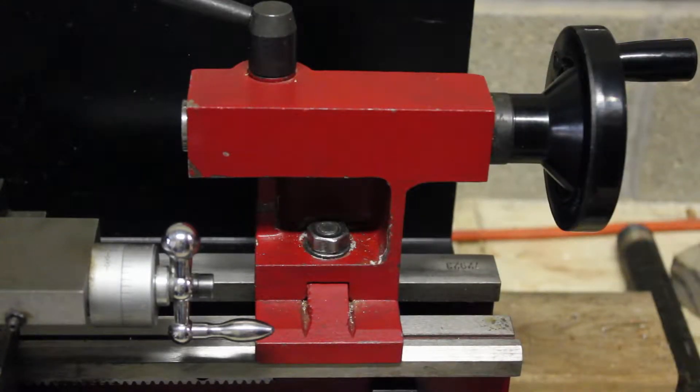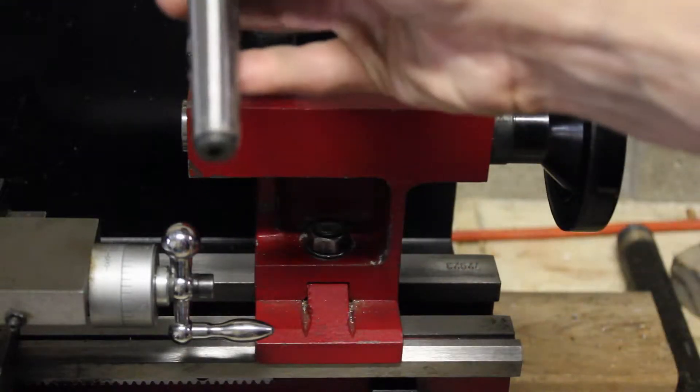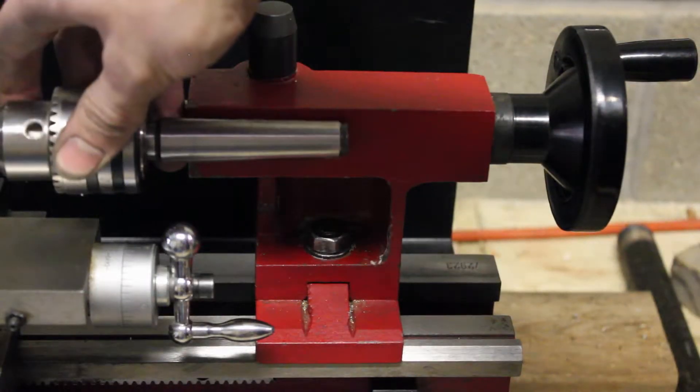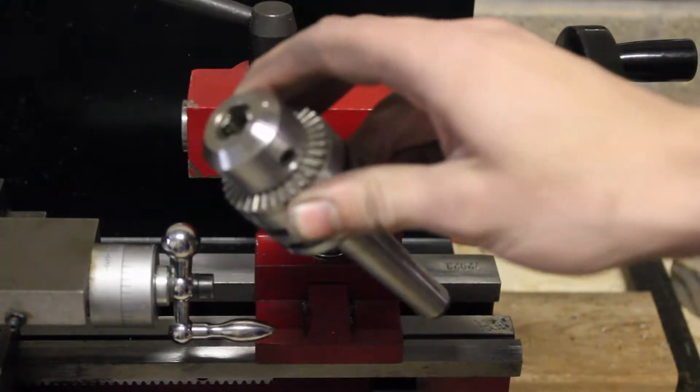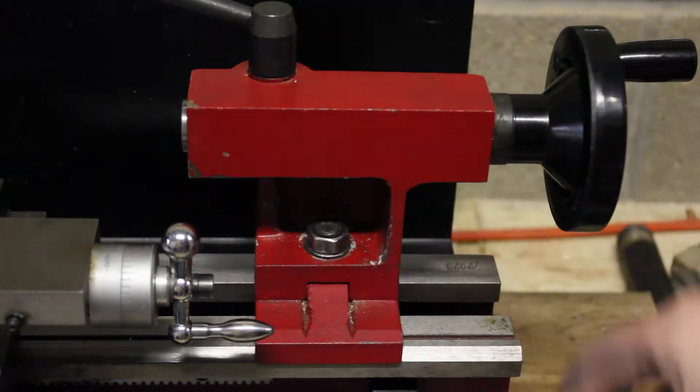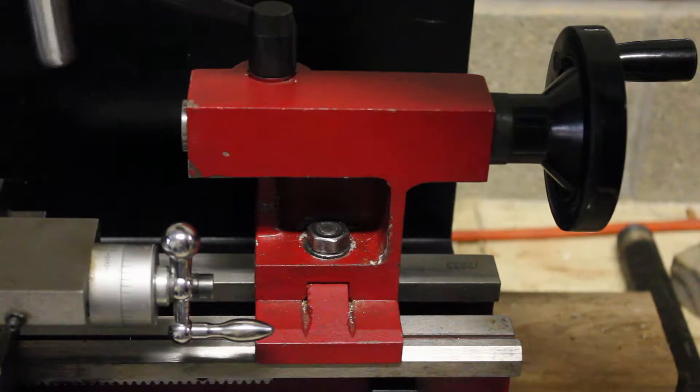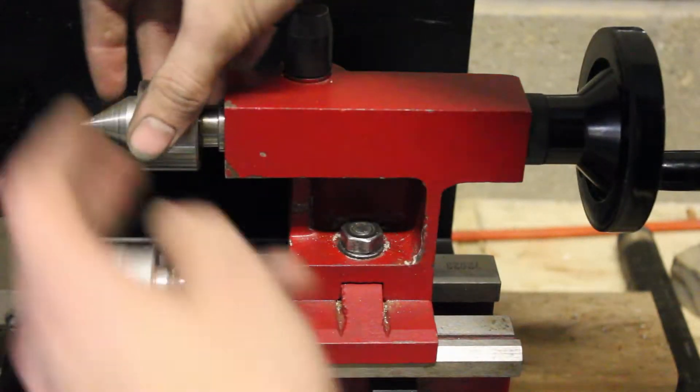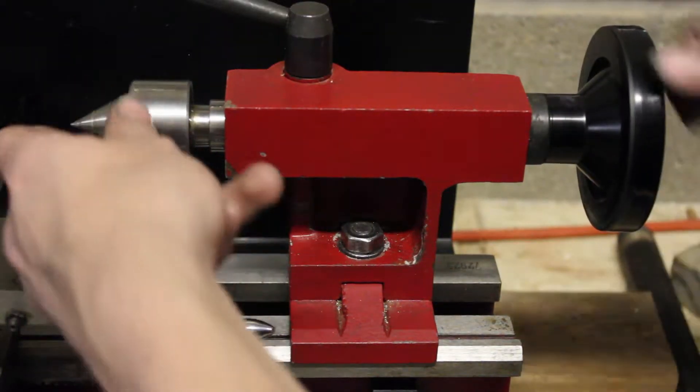This is what you normally use for supporting the back end of your work. But you can also put in a different tool into your tailstock. This is a drill chuck if you want to drill into your part. But most of the time you'll be using the center to support your work.